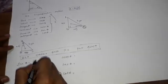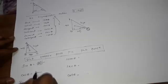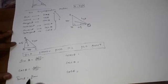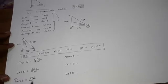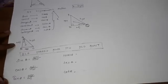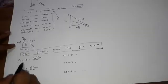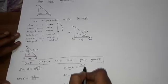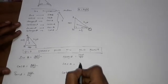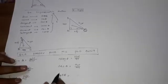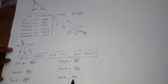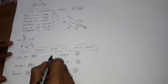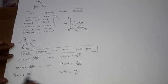The initials stand for: O = opposite side, H = hypotenuse, A = adjacent side, H = hypotenuse, O = opposite side, A = adjacent side. Sine is paired with cosecant because cosecant is its reciprocal — you flip opposite over hypotenuse to get hypotenuse over opposite. Similarly, cos reciprocal is secant, and tan reciprocal is cot.